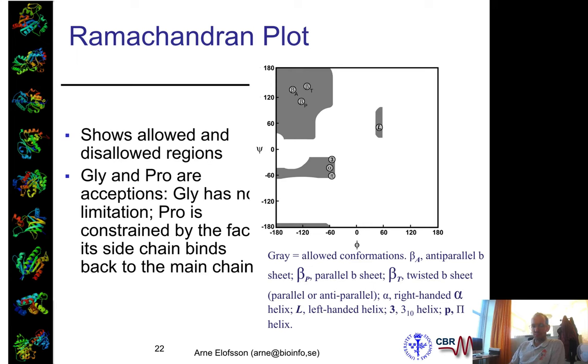However, it's not perfect because many of these areas are not actually that well defined. And also within the alpha helical area, you have at least three different types of helices: the 3-10 helix, the alpha helix, and the pi helix. And there are also slight different preferences for anti-parallel and parallel beta sheets in your group areas.